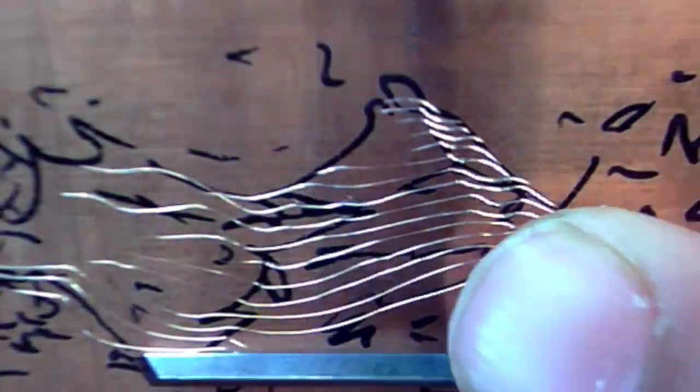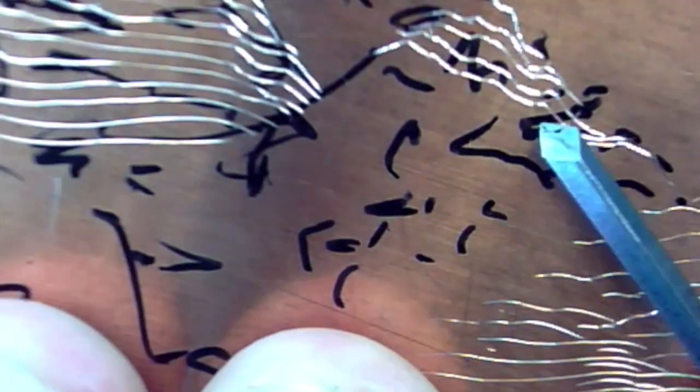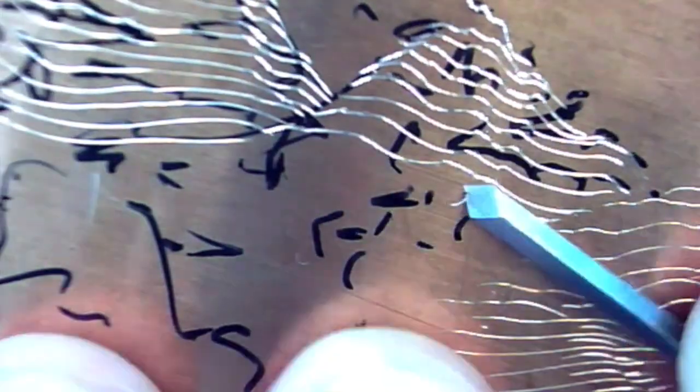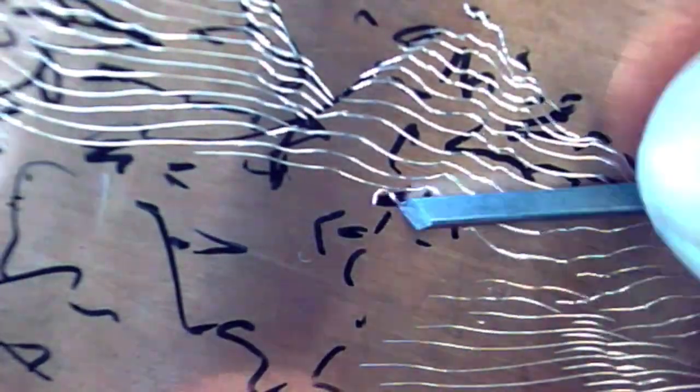Engraving and mark-making on the surface of metal started way before printmaking. This illusion of form is made by lines, and there are some limitations, but at the same time, there are advantages as well.